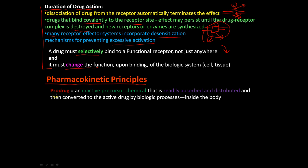So what is a prodrug? A prodrug is an inactive precursor chemical that is readily absorbed and distributed and then it is converted into an active drug by a biological process inside the body.